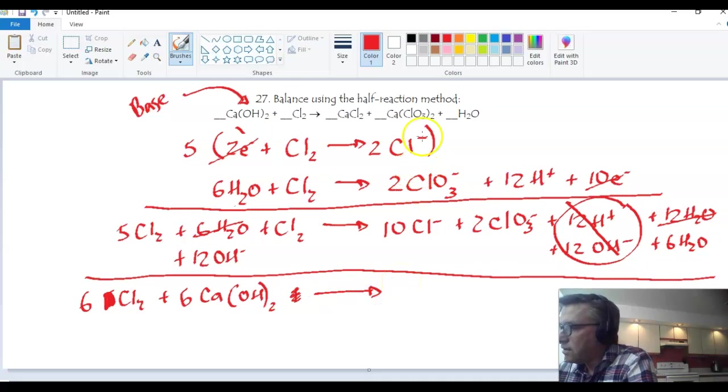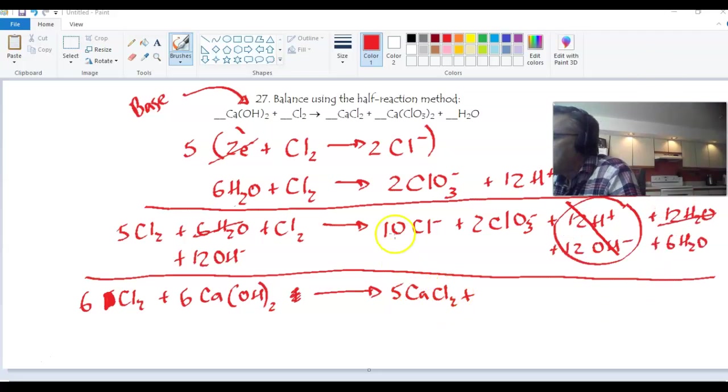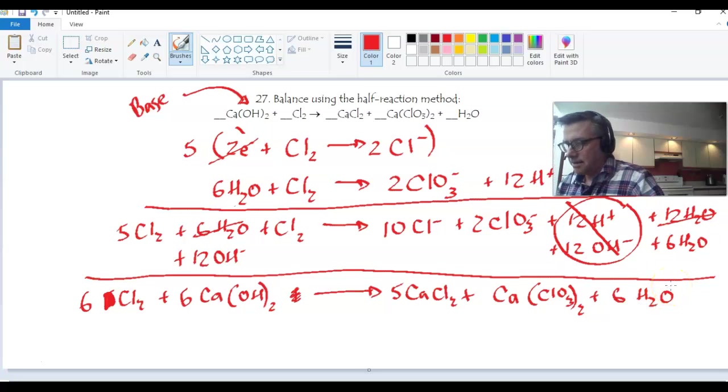And now what are we making? 10 chlorides, right? So they get paired up in calcium chloride. So I'm going to write 5 calcium chloride plus chlorate. How many of them? Two. But they're paired up in calcium chlorate. So that's just one of those, plus calcium chlorate, and my 6 waters. Is that correct? 6 H2O. I believe it's time to check. 6 chlorines, yes. 6 calcium hydroxides, makes sense. 10 chlorides, so that's 5 calcium chlorides, good. 2 chlorates, so that's 1 calcium chlorate, good. 6 waters, good.